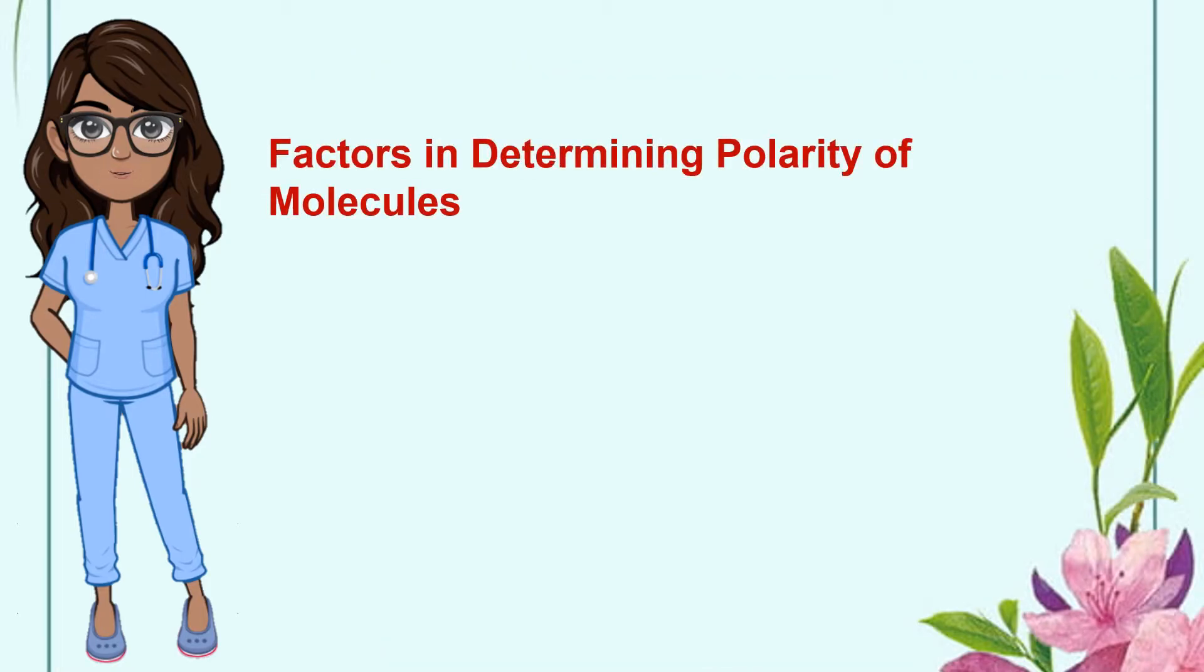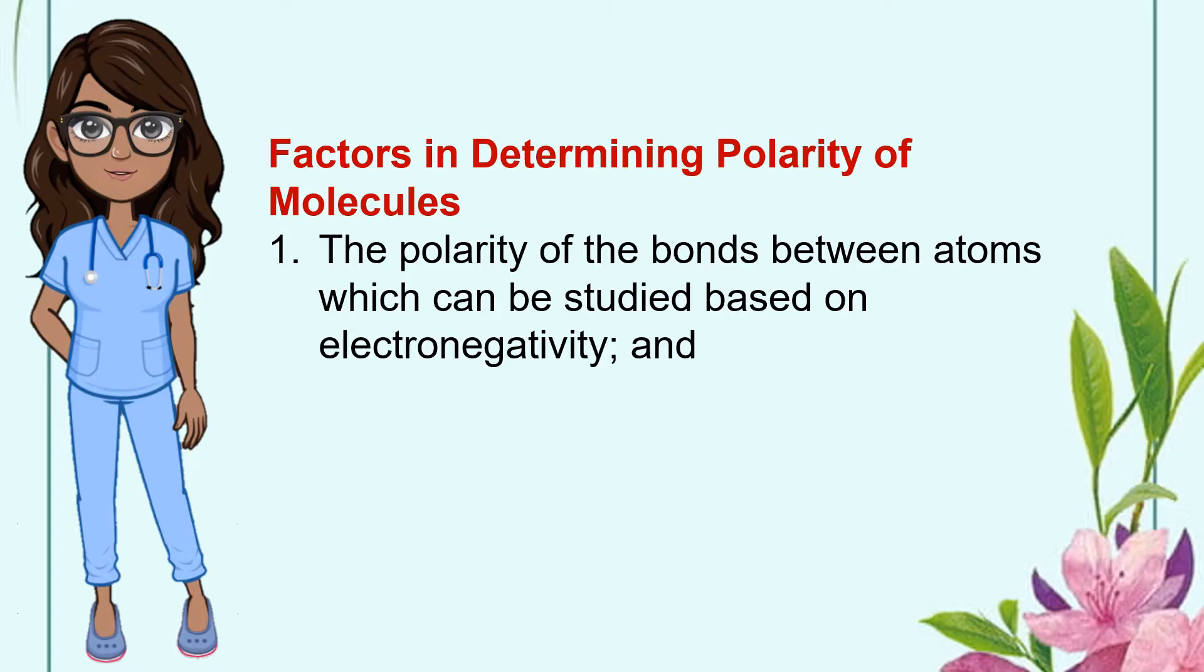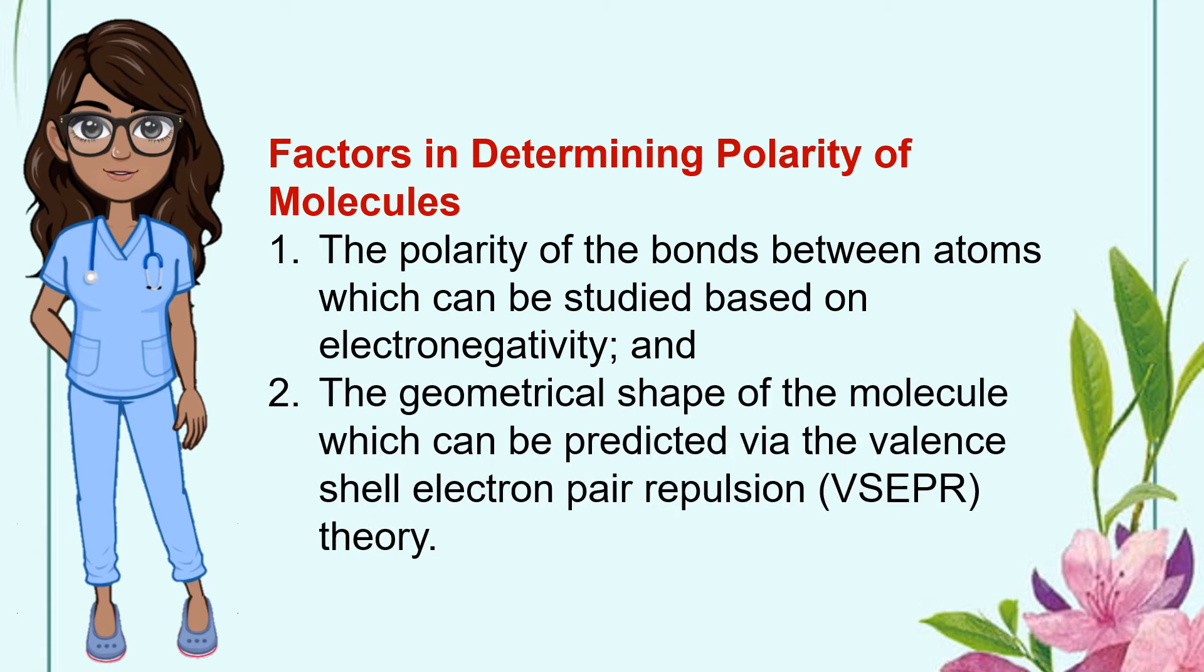There are two factors that determine the polarity of molecules. These are: 1. The polarity of the bonds between atoms which can be studied based on electronegativity, and 2. The geometrical shape of the molecule which can be predicted via the valence-shell-electron pair repulsion or the VSEPR theory.